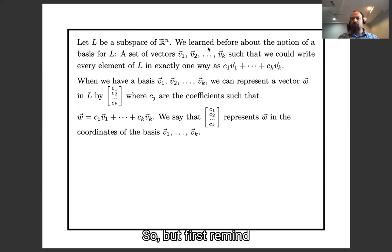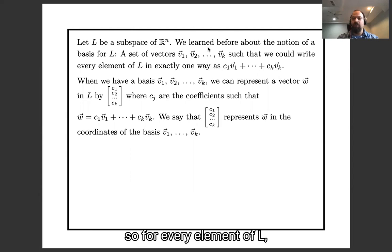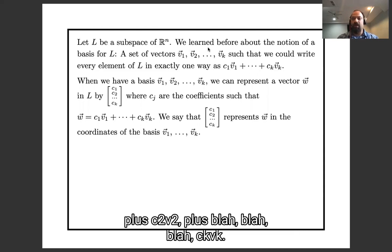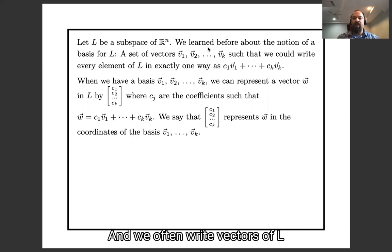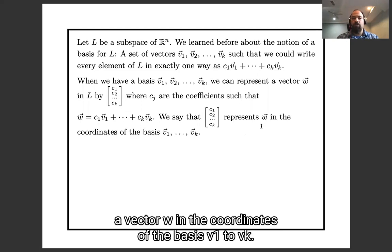So let's first remind ourselves what we've learned about bases. If you have a subspace L, a basis for L is a set of vectors v1, v2, et cetera, such that every element of L can be expressed in exactly one way as c1v1 plus c2v2 plus ... plus ckvk. And we often write vectors in L using this vector of coefficients c1 through ck. So this is writing a vector w in the coordinates of the basis v1 through vk.